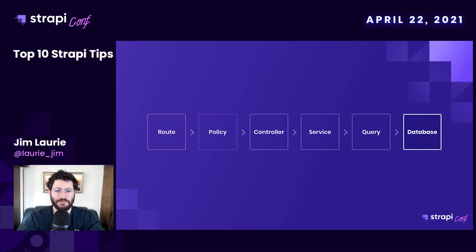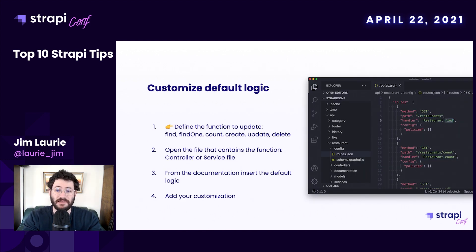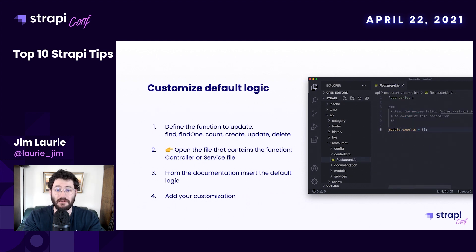In the previous tip we saw the default behavior when doing a request. The idea now is to show you that you can completely customize this behavior to add your custom business logic. The first thing is to define the function you want to update — you can update the find, findOne, count, create, update, or delete function. Then open the controller.js file.